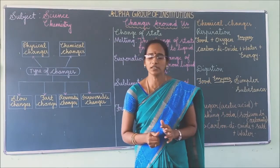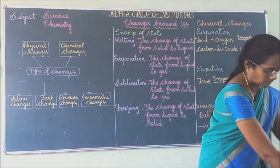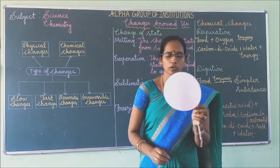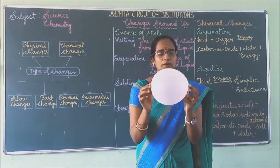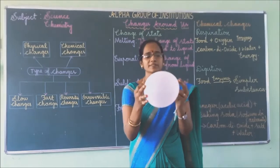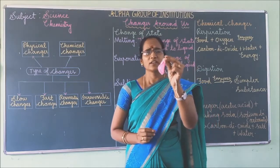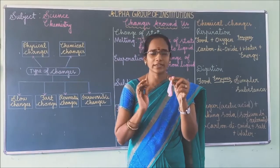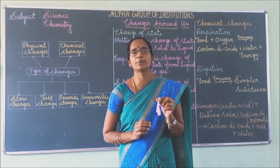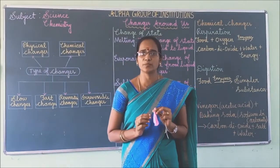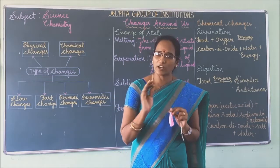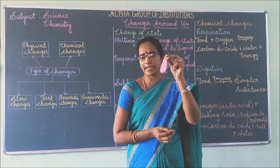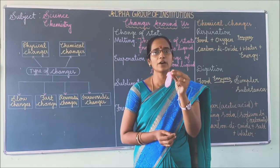Next, activity for irreversible change. You need an inflated balloon and a pin. Bring the pin to the inflated balloon — it bursts. Now observe the shape of the balloon. Will you get the same balloon again? No, you cannot. So this bursting of a balloon is an example of irreversible change — the substance cannot come back to its original position.